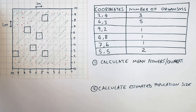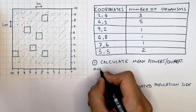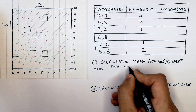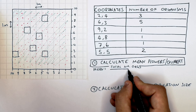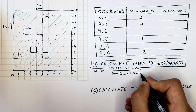Pause the video here to use this data to calculate the mean flowers per quadrat and also to calculate the estimated population size. Method and answers will follow. To calculate the mean flowers per quadrat, the equation is: total number of organisms in all your quadrats divided by the number of quadrats you used.